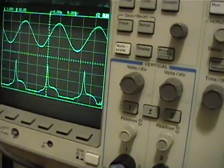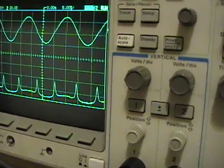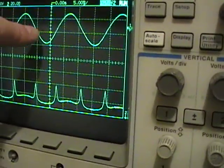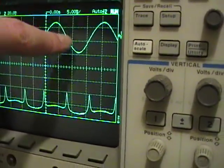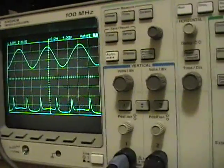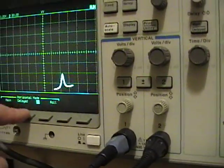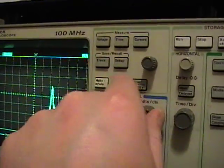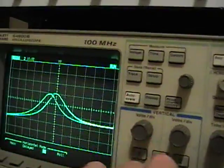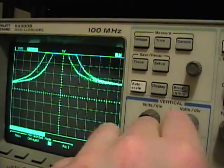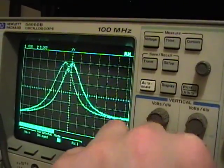If I switch to double pattern, now I get RF output on both the upswing and the downswing. If I put this back into x-y mode, you'll see that we now have two superimposed response curves.